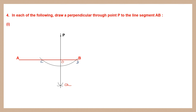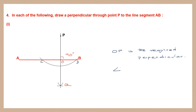Now OP is the perpendicular that has cut AB at 90 degrees. We have 90 degrees on both sides. OP is the required perpendicular. Angle AOP equals 90 degrees and angle BOP also equals 90 degrees. So we have drawn the perpendicular through point P to the line segment AB.